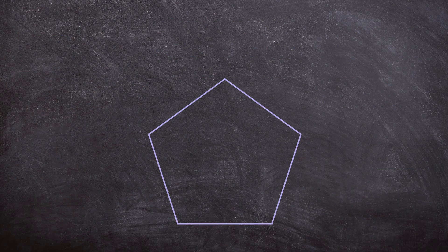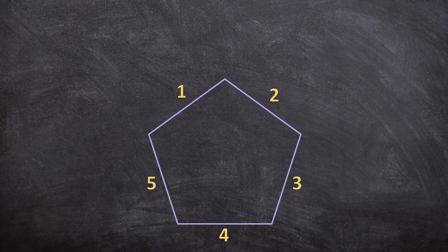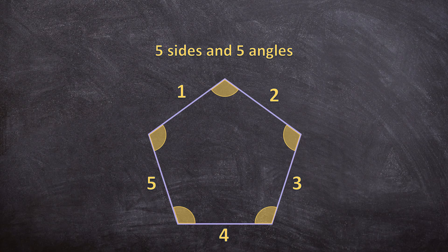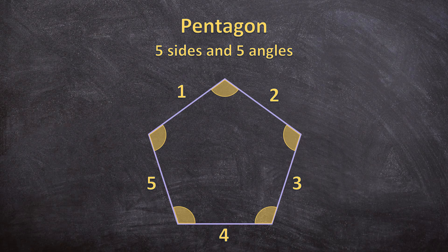What about a shape that has 1, 2, 3, 4, 5 sides and 5 angles. So they have 5 sides, 5 angles and they are called pentagons. Here are a few more examples of pentagons.